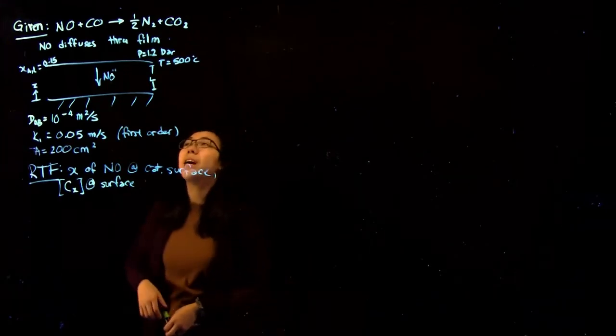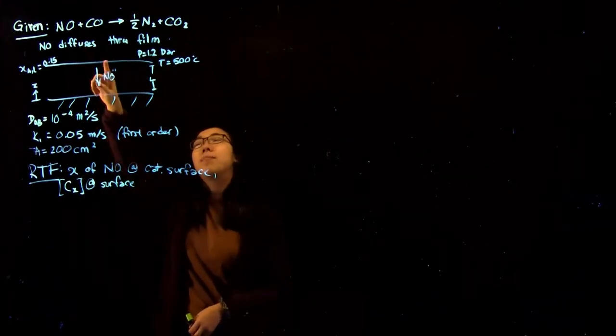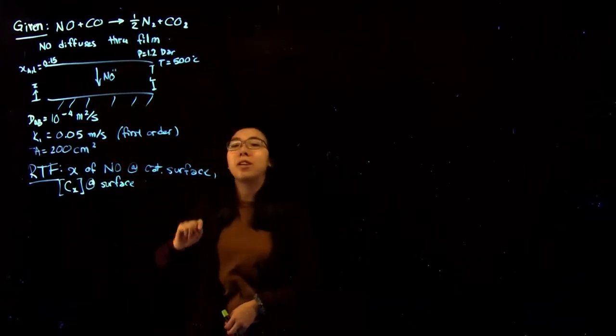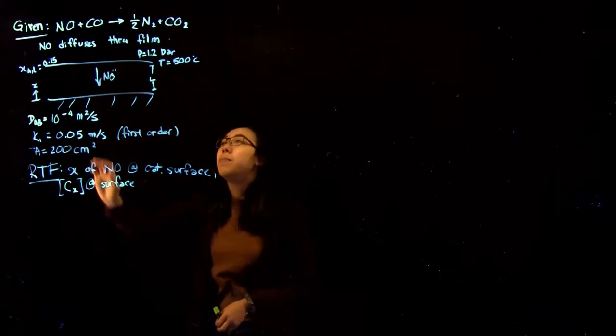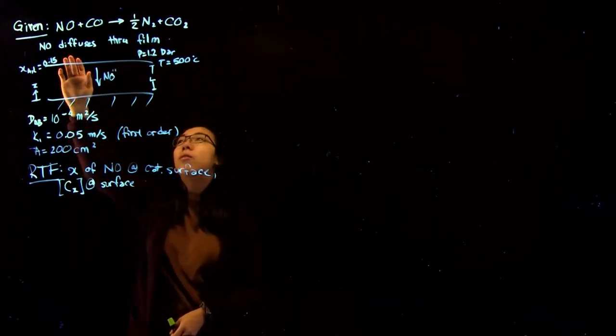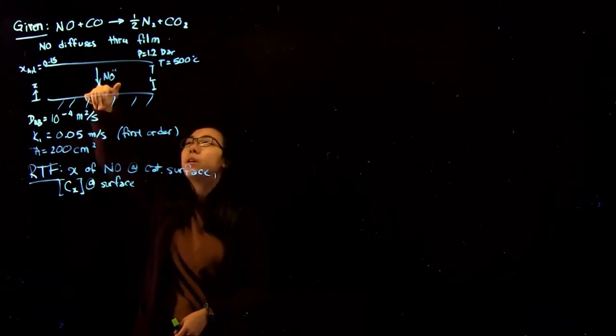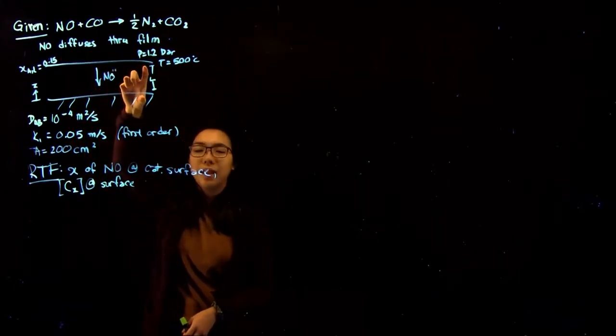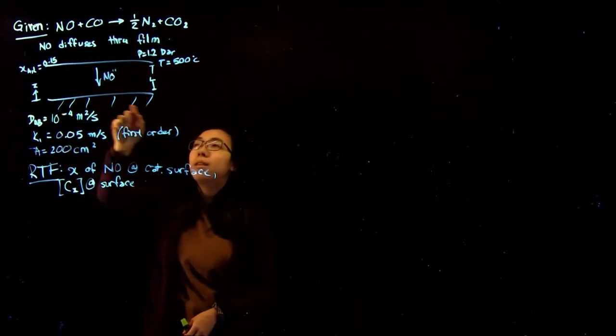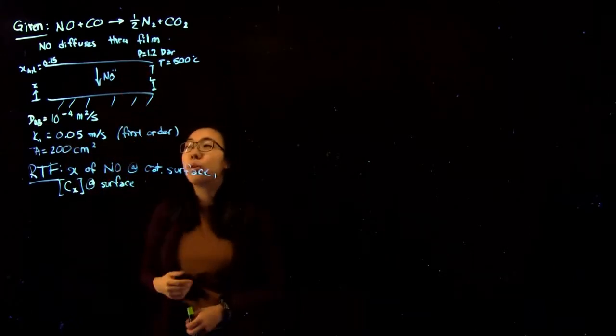So in this question, we have a first-order reaction where nitrous oxide plus carbon monoxide becomes nitrogen gas and CO2. You have nitrogen, or NO, that's in this layer up here, and it's diffusing through this gas film, which has a length L, onto this catalytic surface where it is reacting.